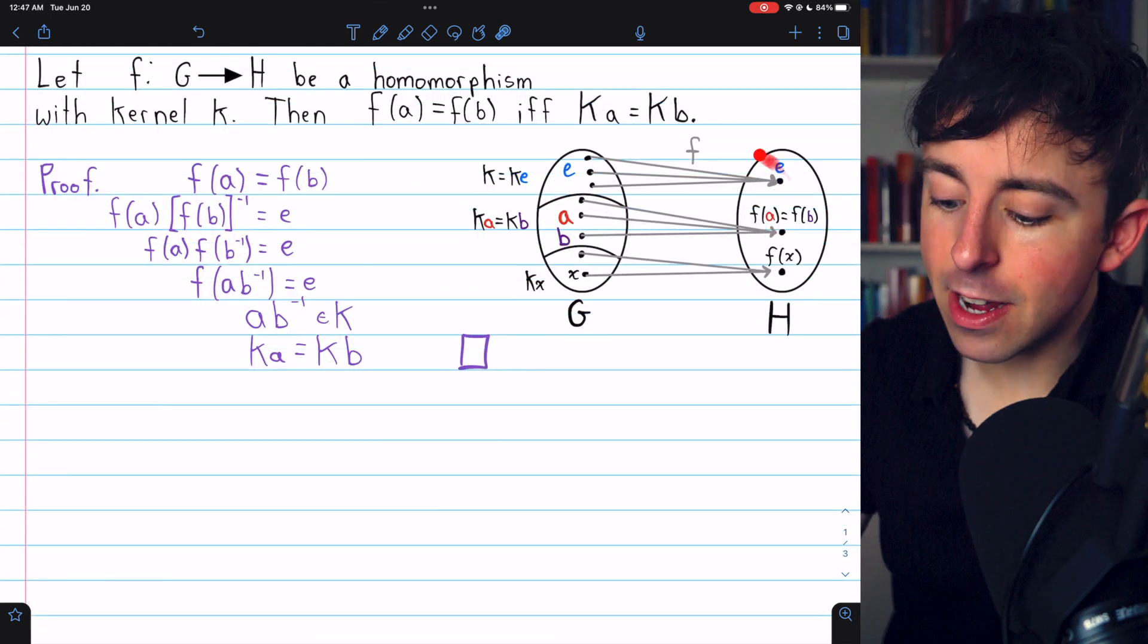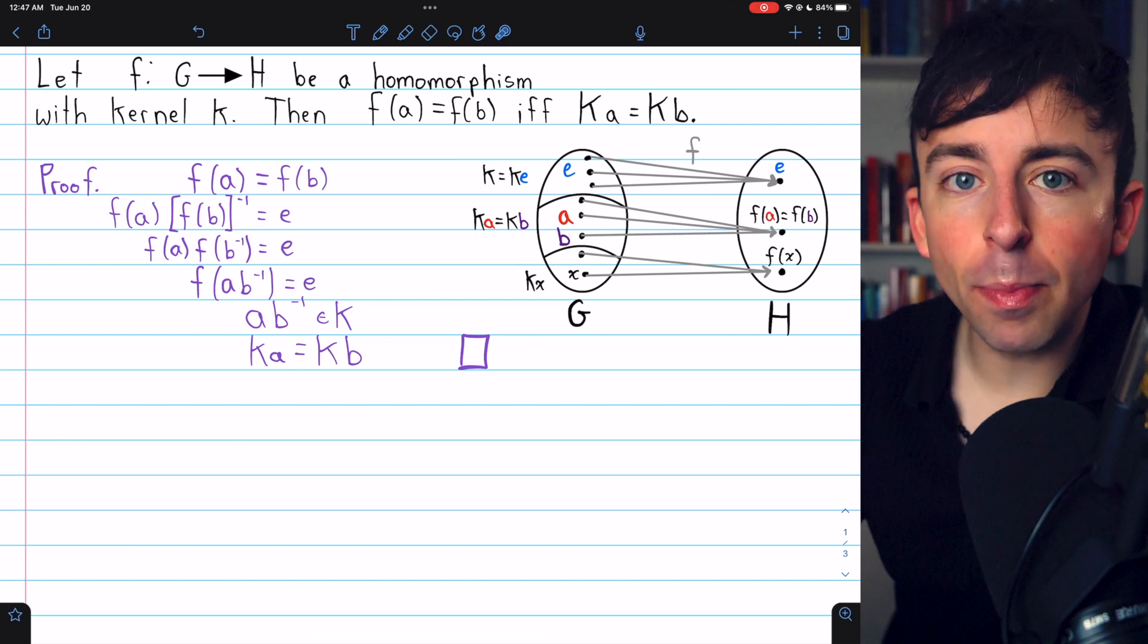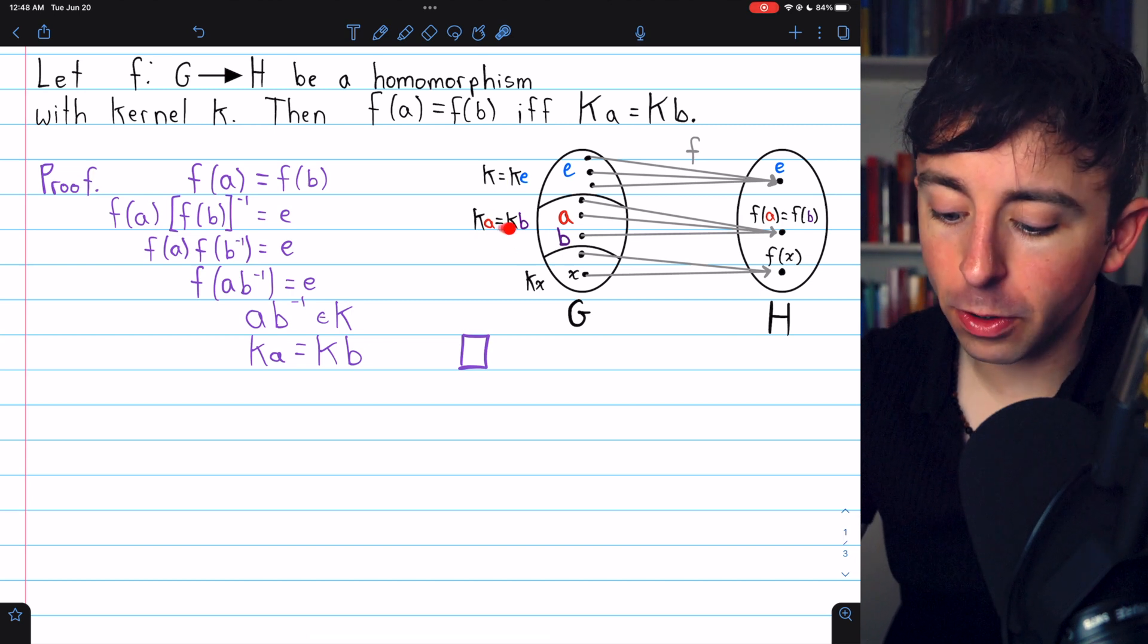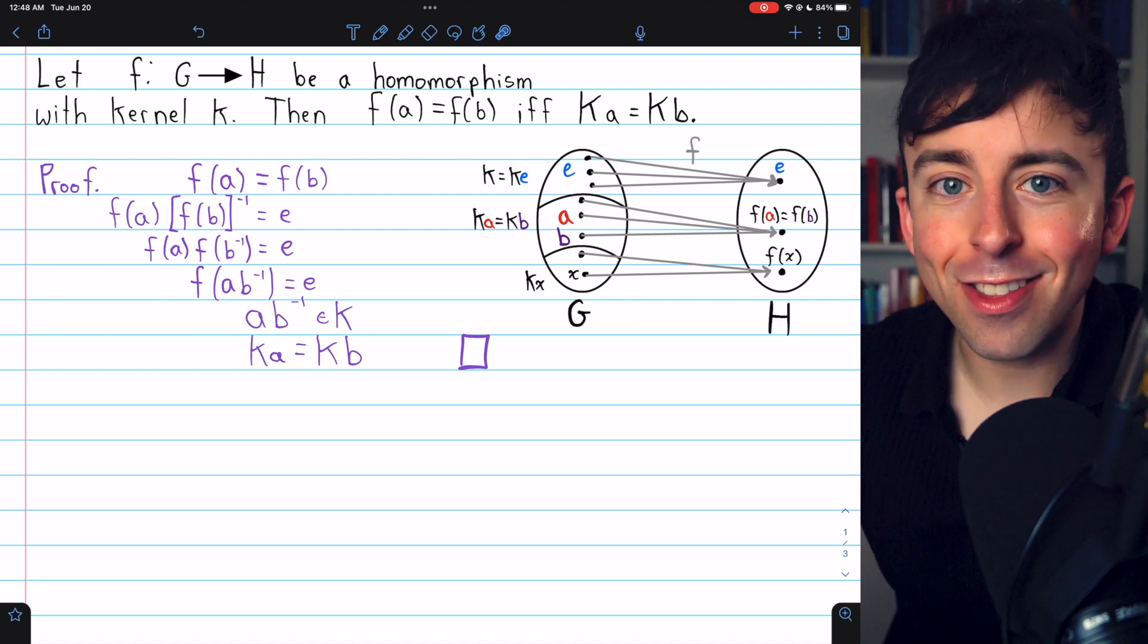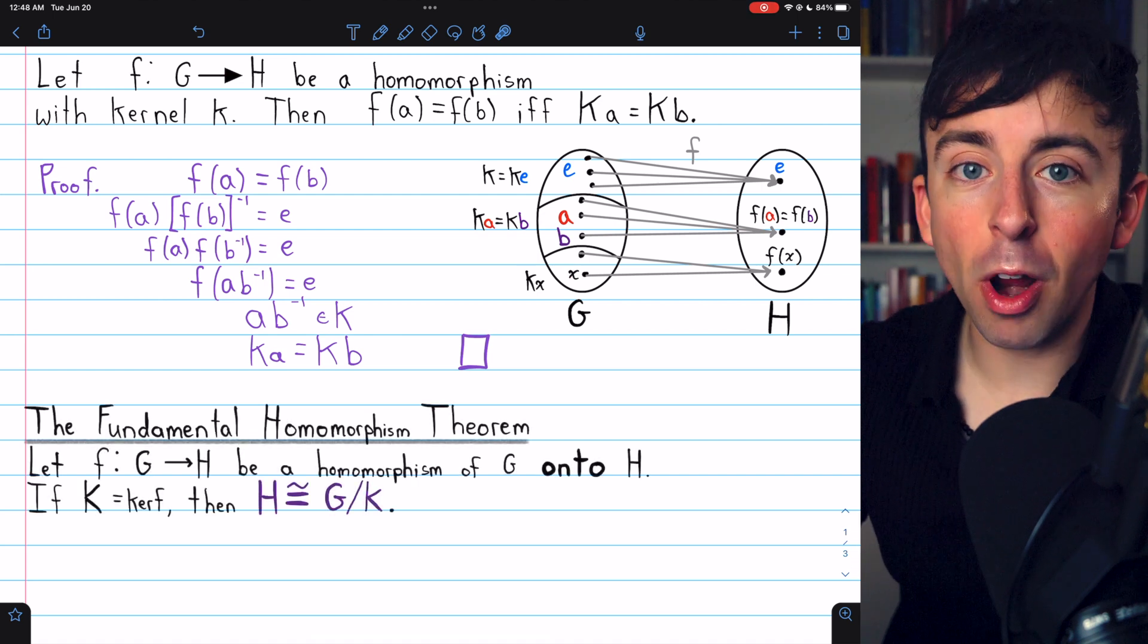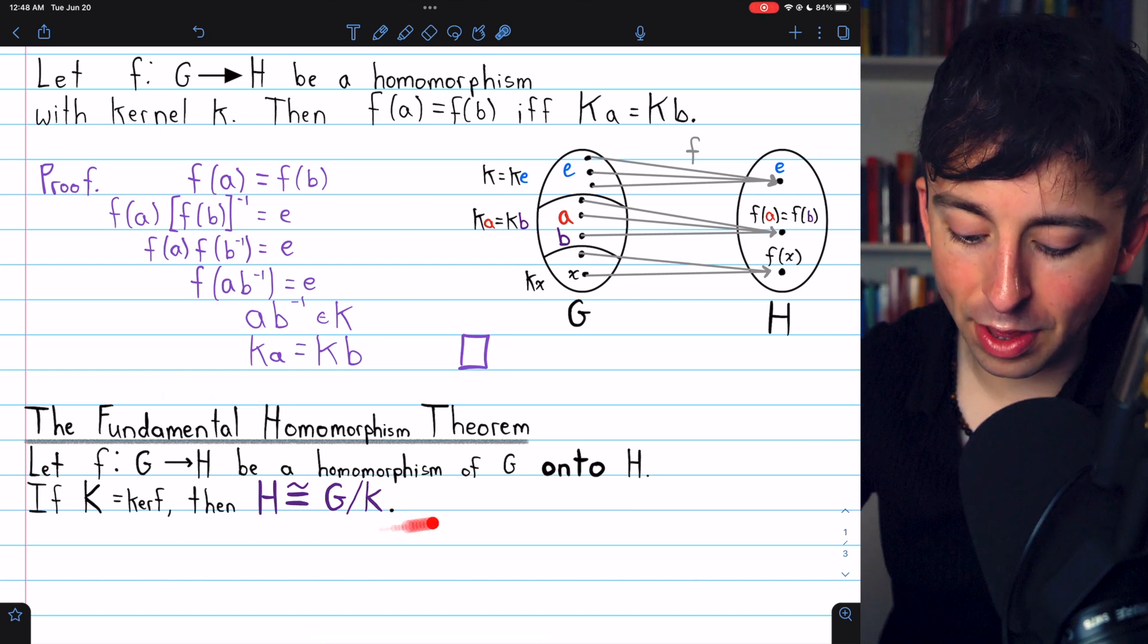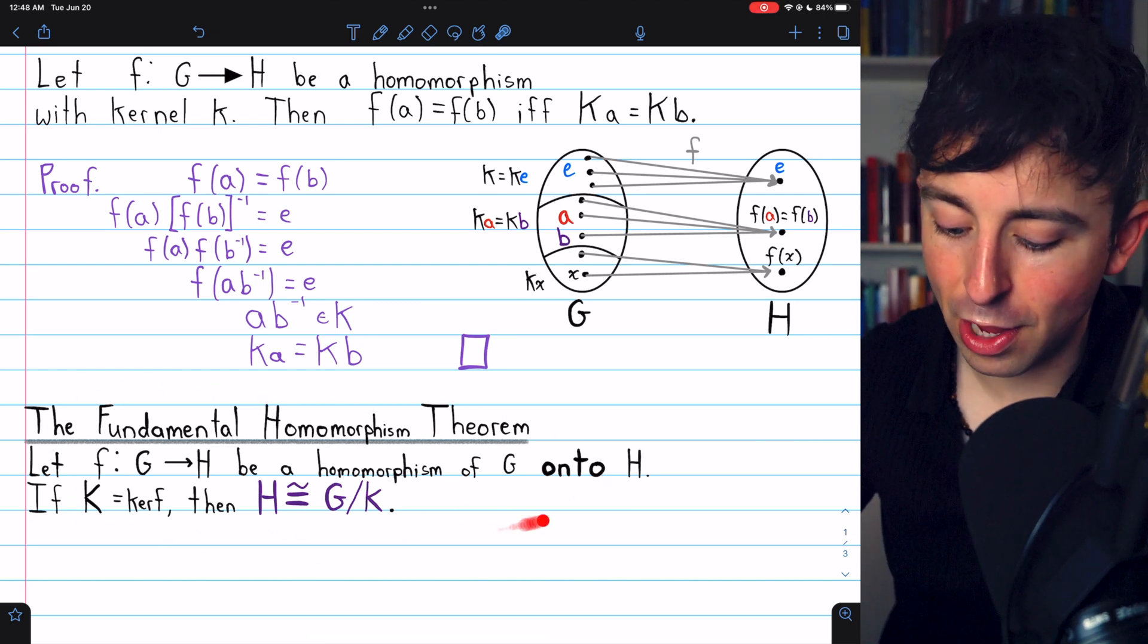More generally, what we can see here is that F is actually putting the cosets of the kernel into a one-to-one correspondence with the group H. And you can probably imagine that's going to come in handy when we prove the fundamental homomorphism theorem. That's what we'll do next time.